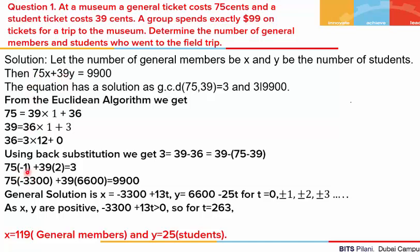Let's come back to this. We have 75×(−1) + 39×2 = 3. If we compare this with the original equation, our right hand side was 9900, not 3. So we will try to make the right hand side 9900 by multiplying these multiples by 3300. This gives us 3300, and 2×3300 is 6600, so the right hand side becomes 9900. From this, we know that −3300 is the initial solution x₀ and 6600 is the initial solution y₀.